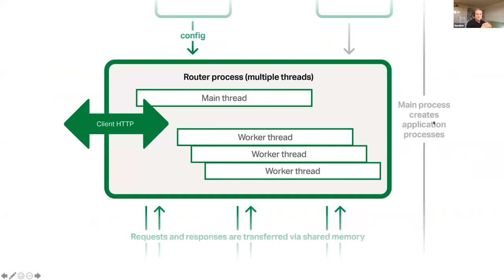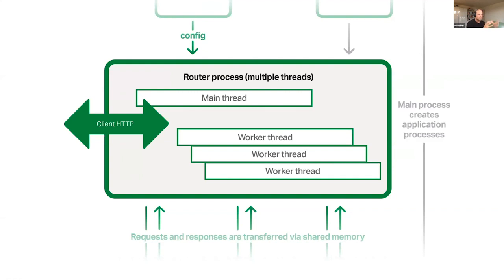The router process is the process that handles incoming HTTP client connections from the outside world. It contains a main thread and several worker threads depending on how many applications are configured. All client connections sent to unit are handled by the router process, which enables you to configure routing policies called matchers.